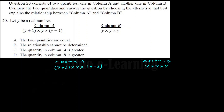To compare the two quantities, we want to simplify each expression. Let's simplify Column A's expression. Starting with (Y+1) times Y: that gives Y squared plus Y. Then we multiply that by (Y-1).